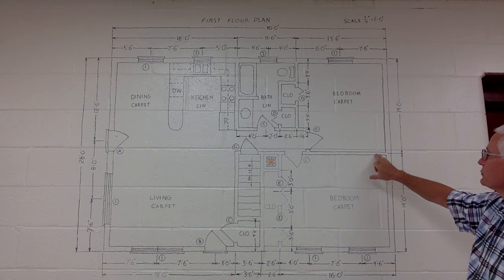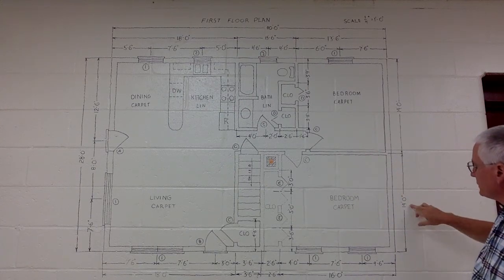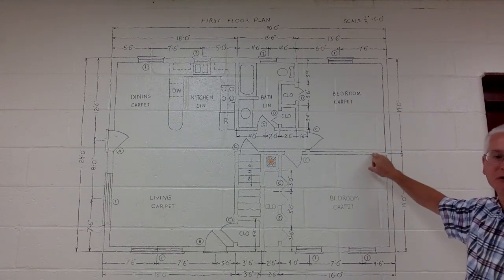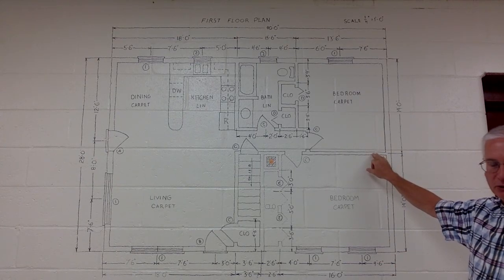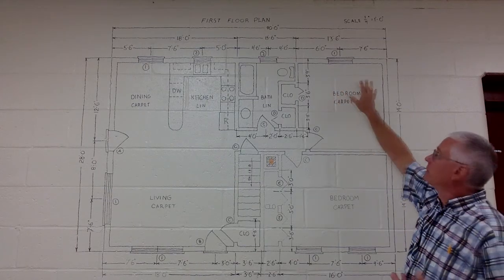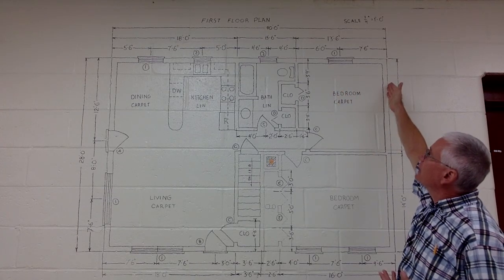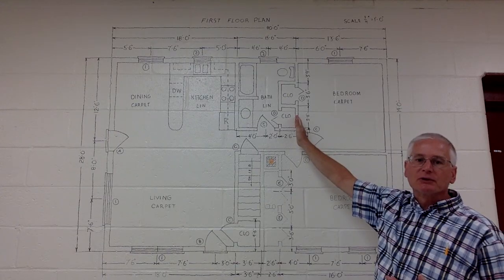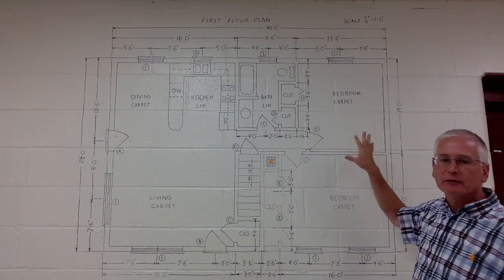14 feet from the outside of the wall to the center of this interior wall. So if the carpenter measured from here up 14 feet, that's where that particular wall would go. Across the top, again there are dimensions from the outside of the house — 13 foot 6 — that would go to the center of this wall. Dimensions can be around the outside of the drawing and on the inside.